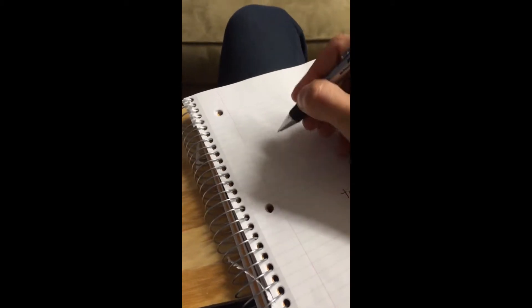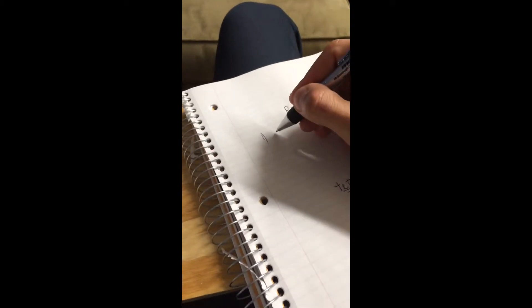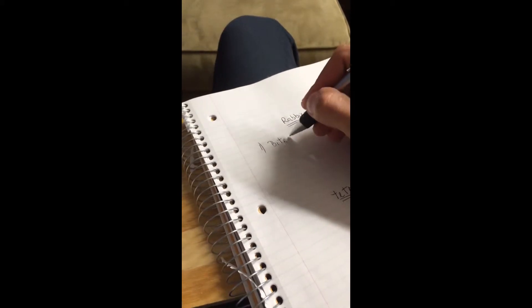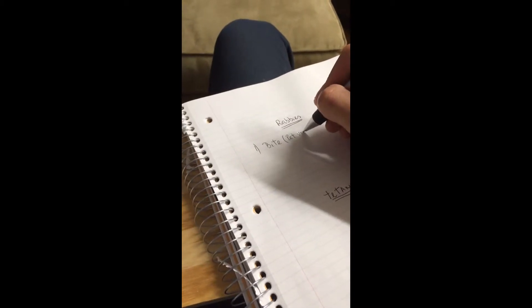I'll explain the scenarios on rabies vaccination and immunoglobulin. The first case: you have a bite by a pet that has been vaccinated and doesn't have symptoms. What do you do? Nothing. Observe the animal for 10 days.